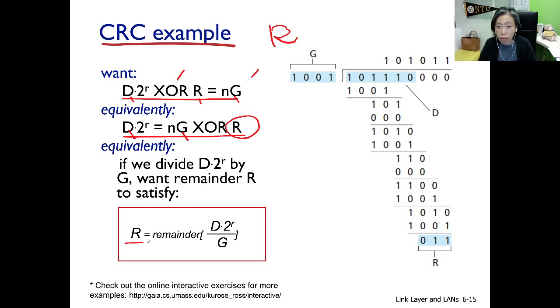Yeah, this is what the sender is doing exactly. R is the remainder of a division. D divided by G, modular 2.